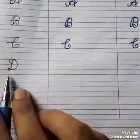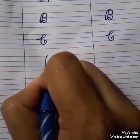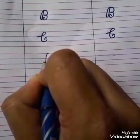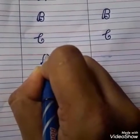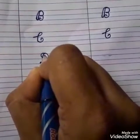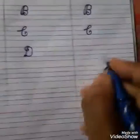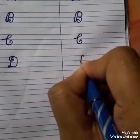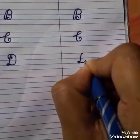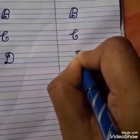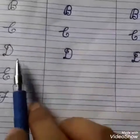Now we will write capital cursive D. First we will make a cross standing line. Then we will make a very small circle and a big curve. That completes capital cursive D.